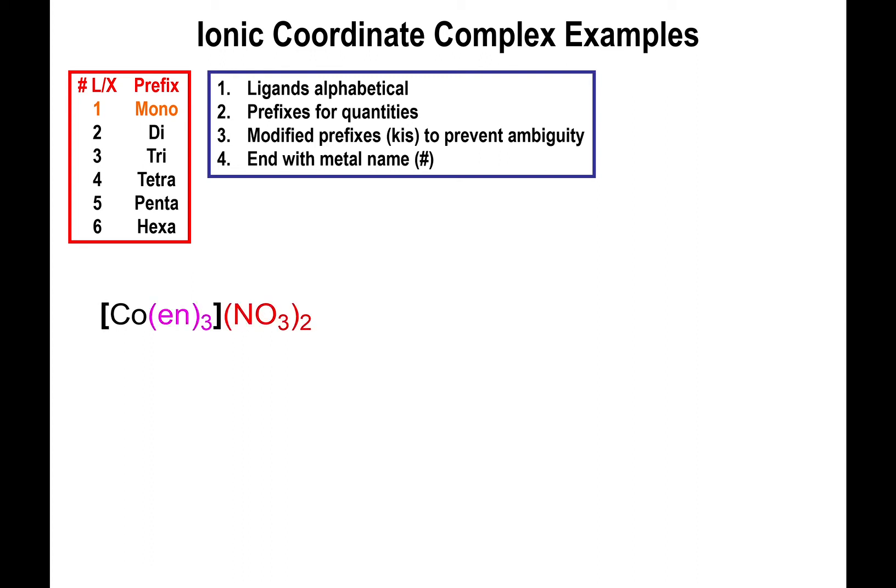So we start by naming the cation. We have ethylenediamine as a ligand, we have three of them. Since ethylenediamine has the word di within it, we use the prefix tris to emphasize the amount. So we have tris ethylenediamine, and Co stands for cobalt, so we input cobalt in there. Now this is the cationic portion of the salt, so here you don't have to add the -ate ending. If you call this cobaltate, you're automatically wrong. This is just regular cobalt.